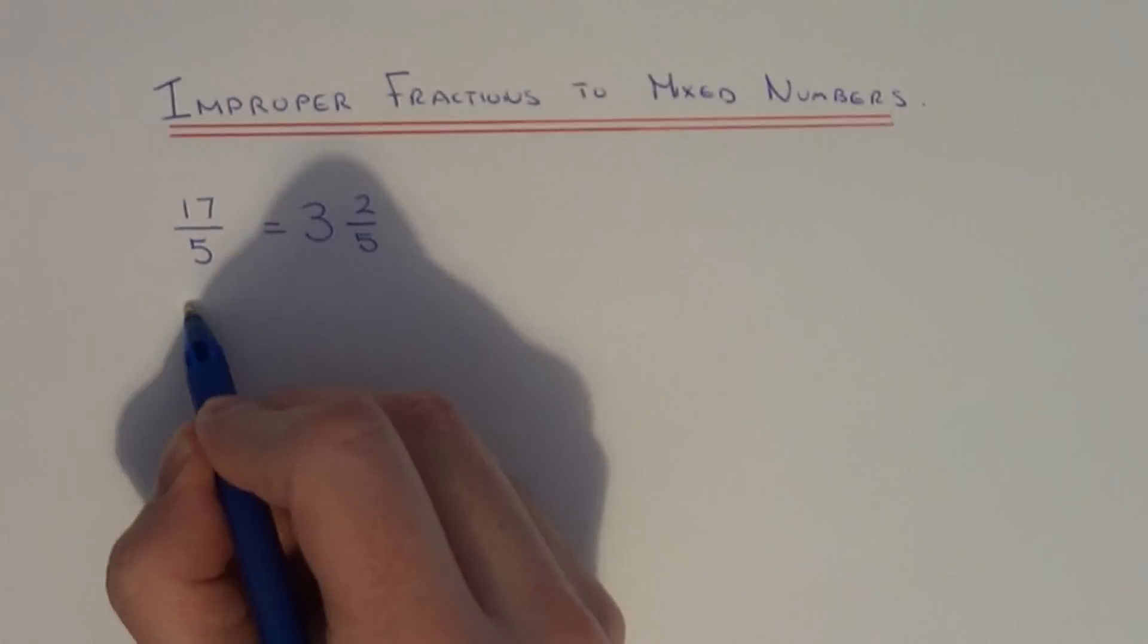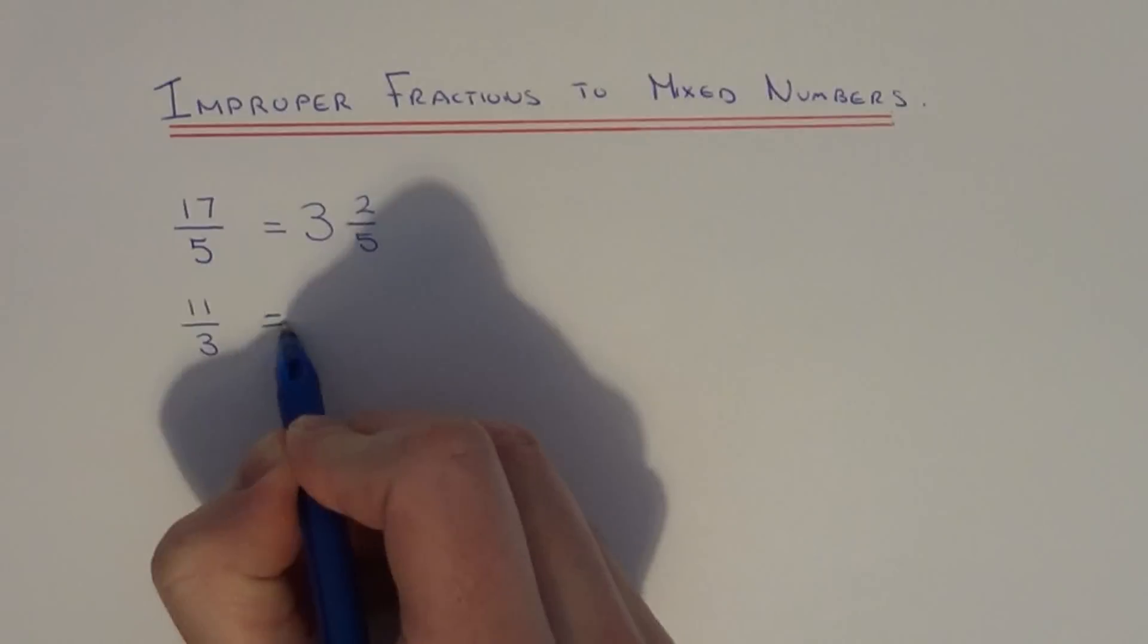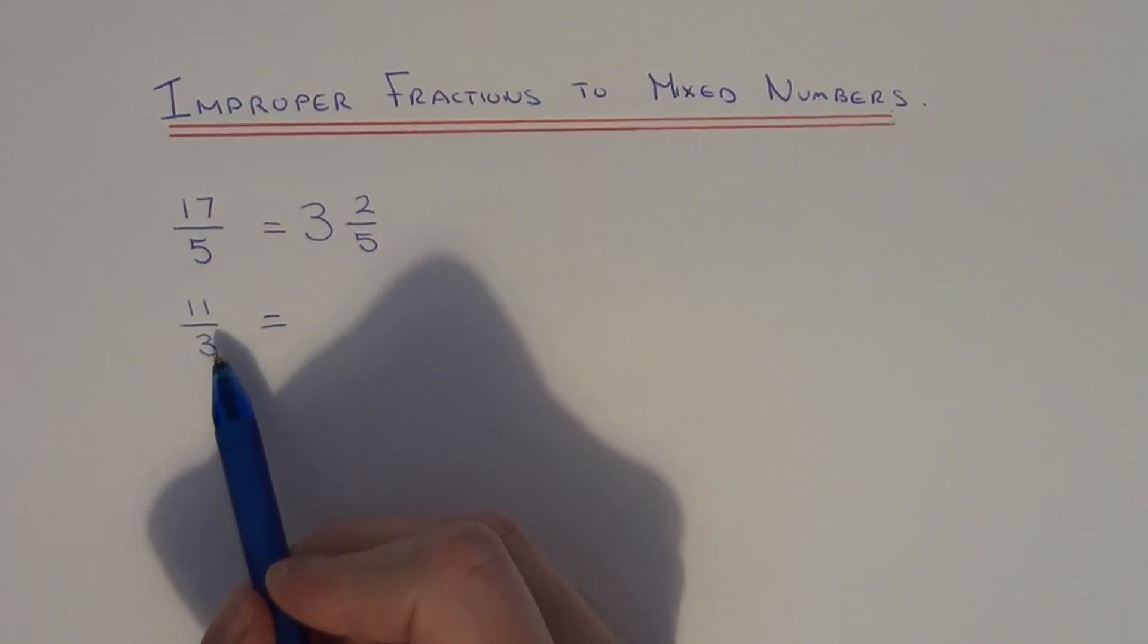Let's do another example. This time let's do 11 thirds. So again all we need to do is divide the numerator by the denominator. So 11 divided by 3 is 3, 6, 9. That's 3, with a remainder of 2 again.